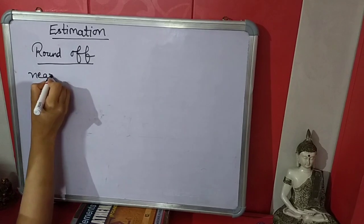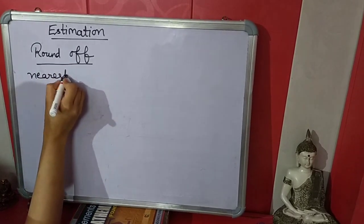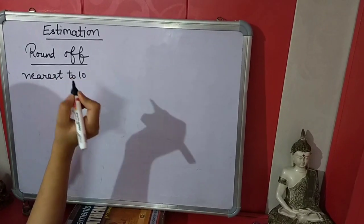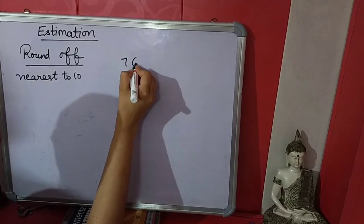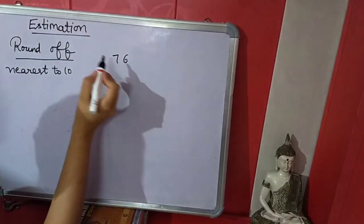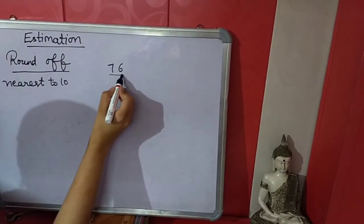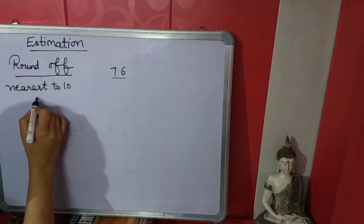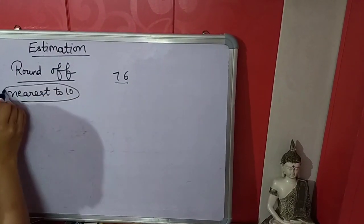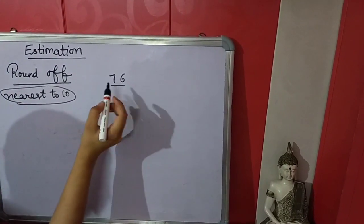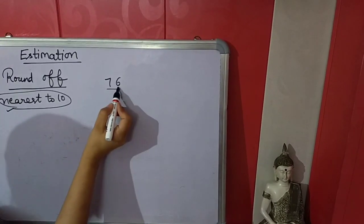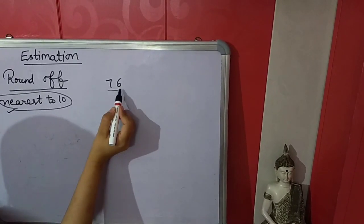First is nearest to 10. If we have 76 and we have to estimate this number nearest to 10, we will use this rule. We will use nearest to 10 because there are only two digits.